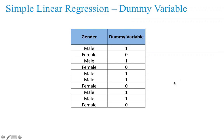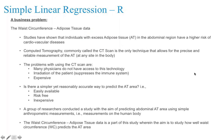Now let us understand this case study. This case study is about predicting adipose tissue data using the waist circumference value. Studies have shown that individuals with excess adipose tissue in the abdominal region have a higher risk of cardiovascular diseases. Computed tomography — commonly called CT scan — is the only technique that precisely allows you to measure adipose tissue at any site of the body.